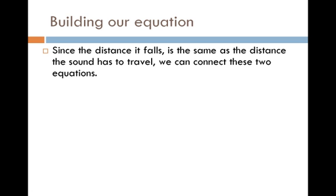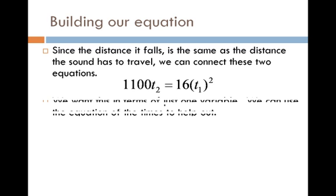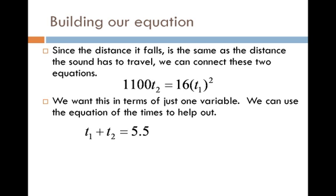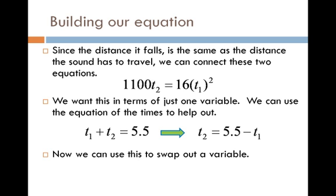With these equations, we can start to connect our information a little bit better. Since the distance it falls is the same as the distance the sound has to travel, we're going to connect those two equations by actually setting them equal to one another. Now, that's a pretty good equation. It is quadratic. But I have two variables in there and I only want one if I'm going to solve it. So in order to help me out with this, I'm going to borrow one of those other equations, the one that deals with time. If I take that one and I solve it for T2, then I can take that information and actually substitute it into my quadratic. What that gives me is a quadratic equation and I only have one variable, just the T1. This is something that I can actually move forward and try and solve.